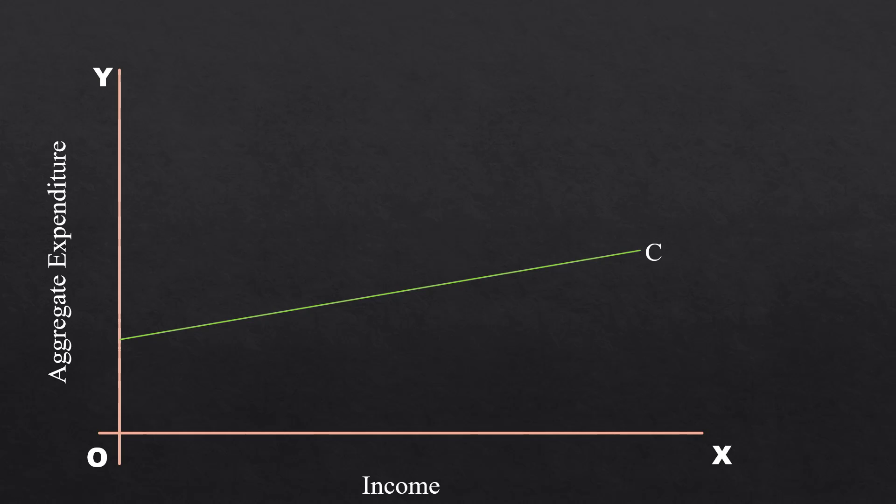Consumption curve starts somewhere along the y-axis. In our graph, it starts at A. A is autonomous consumption. It is independent of income. It determines where the consumption curve to start along the y-axis. The MPC is the slope of the consumption curve. Since MPC is constant, the consumption curve has a uniform slope.